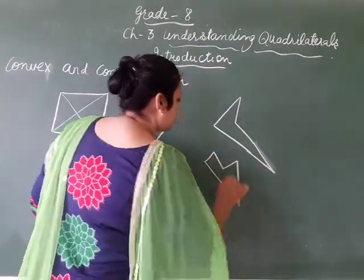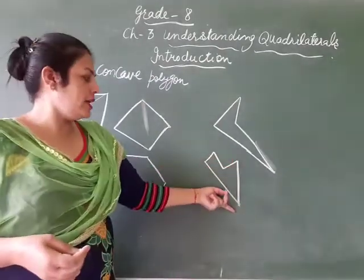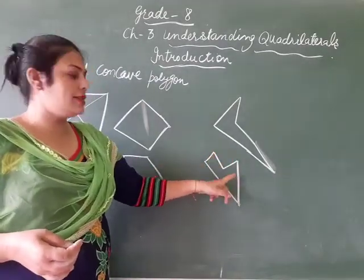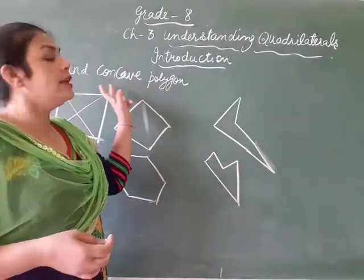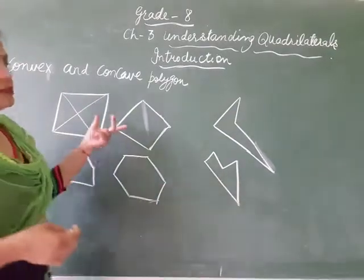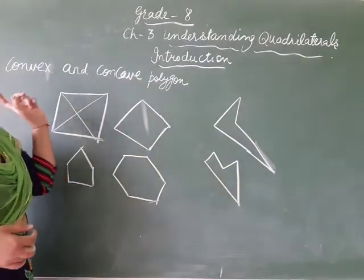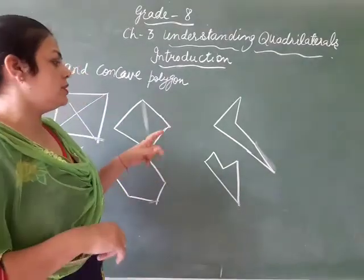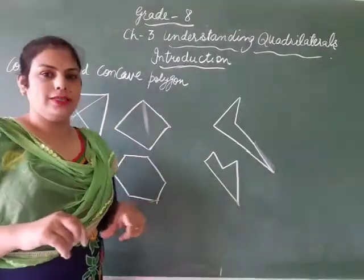These are also polygons — closed figures made by straight lines. But their diagonals lie outside the polygons, so these are called concave polygons. Simple regular-looking shapes are called convex polygons, and those with some zigzag or indentation are called concave polygons.